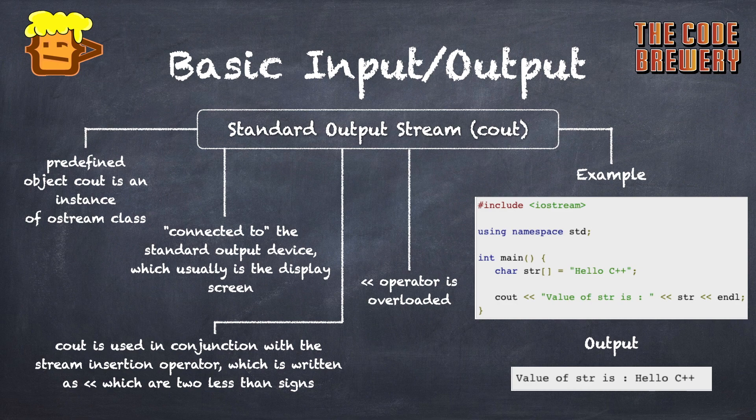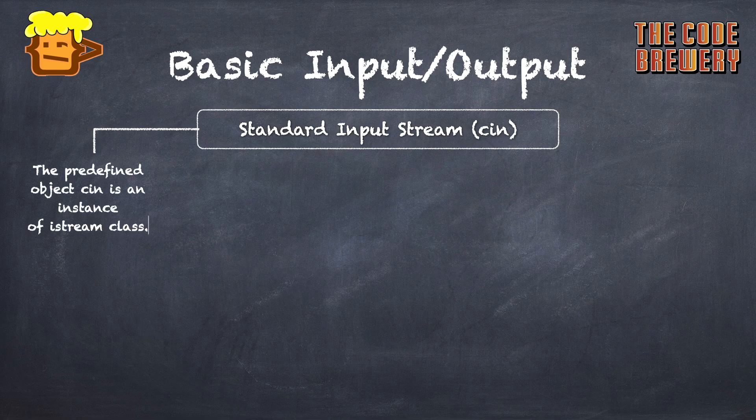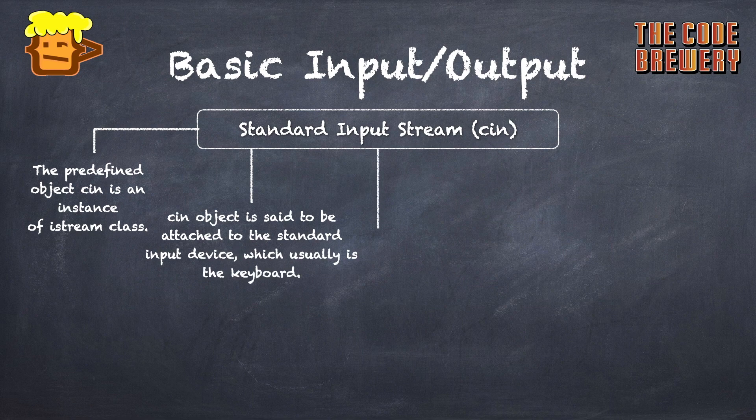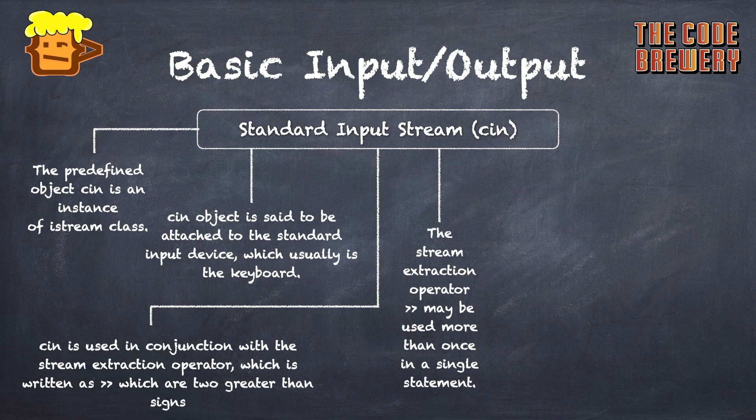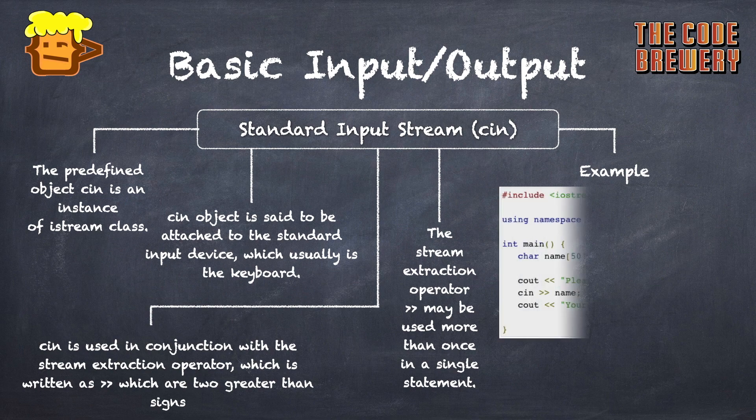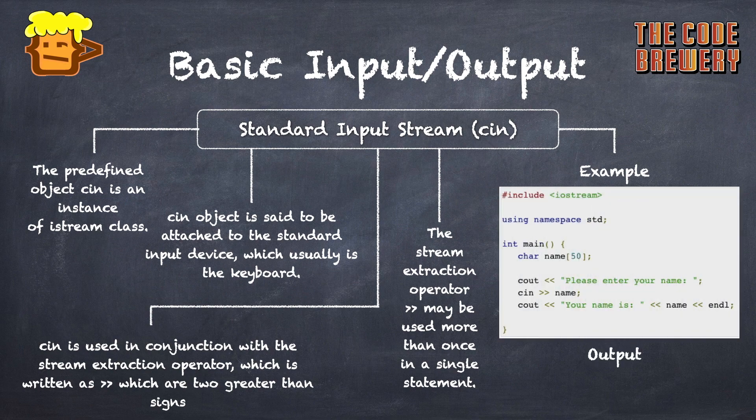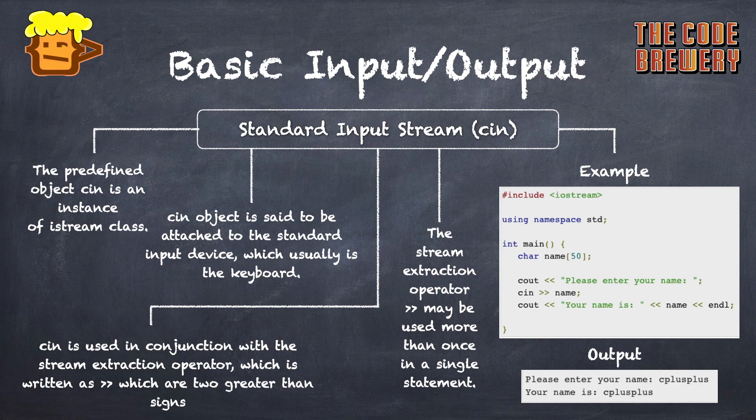If we talk about the standard input stream cin: the predefined object cin is an instance of the iostream class. The cin object is attached to the standard input device, which is usually the keyboard. Cin is used in conjunction with the stream extraction operator, written as two greater-than symbols (>>). The C++ compiler determines the data type of the entered value and selects the appropriate stream extraction operator to extract the value and store it in the given variables.